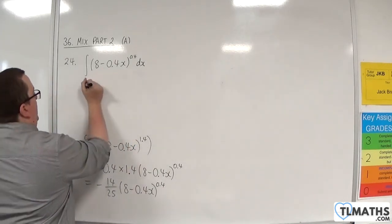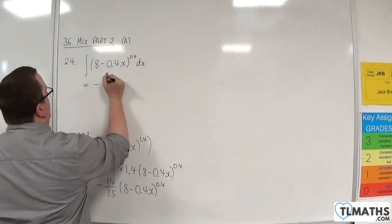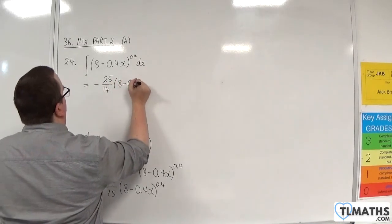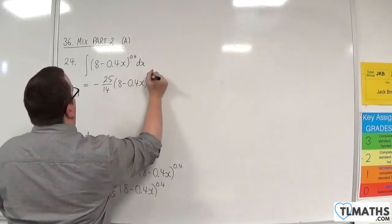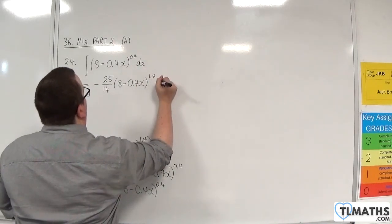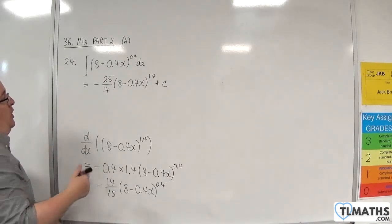So if that differentiates to that, then this must integrate to the reciprocal of this, which is minus 25 over 14, 8 take away 0.4x to the 1.4 plus a constant c. So that's by reversing the chain rule.